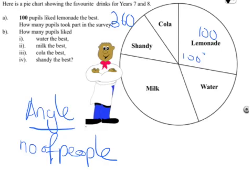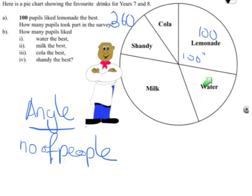For instance, if in this question we'd been told there were 200 people in there, then it's 100 degrees for 200 people, so each person would be half a degree. If we were told this was 50 people, it would be 100 degrees divided by 50, so each person would have been 2 degrees all the way around. Going around the chart, you should find that water is 60 degrees so that's 60 people, milk is 120 degrees so that's 120 people, shandy is 45 degrees, and cola is 35 degrees.